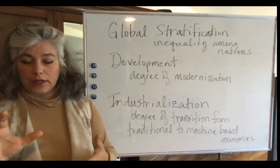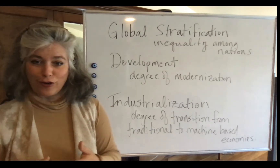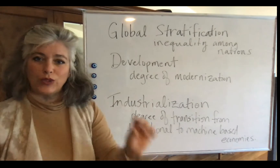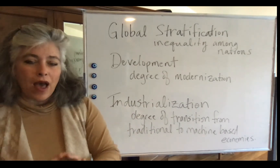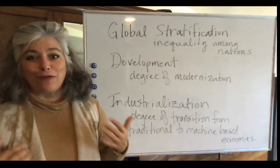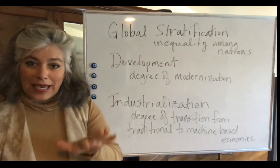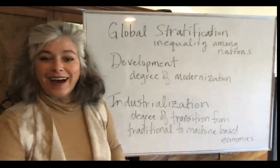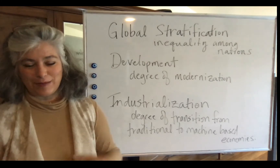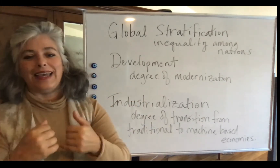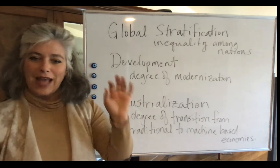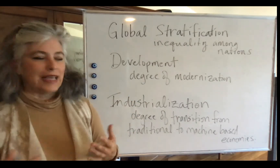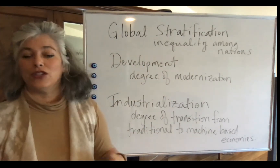We use particular classifications to measure development within and among nations. Those words are listed in the first couple of pages of your development chapter — concepts called Gross National Product (GNP), Gross Domestic Product (GDP), and Gross National Income (GNI). These are the abbreviations used in writing after the full term is introduced. They provide different ways of measuring how nations rank in comparison to each other throughout the world.